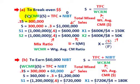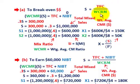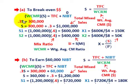For the break-even point in dollars, we go back to our equation: weighted average CM ratio times total sales equals total fixed cost plus net income before taxes. At break-even, net income before taxes is set to zero, so solving for S: S equals total fixed cost divided by the weighted average CM ratio. With total fixed cost of $300,000 and weighted CM ratio of 0.30, sales equals $300,000 / 0.30 = $1,000,000 total mixed sales.